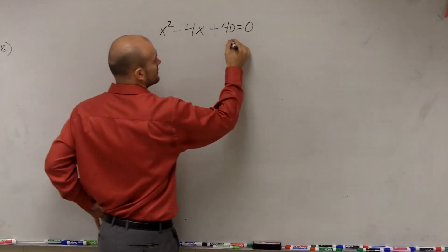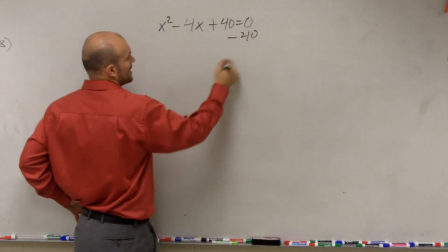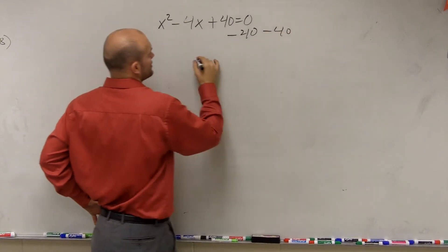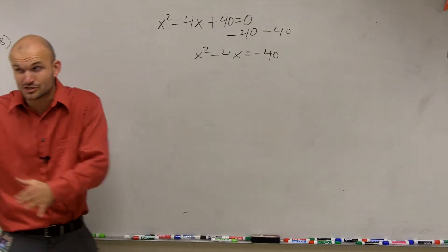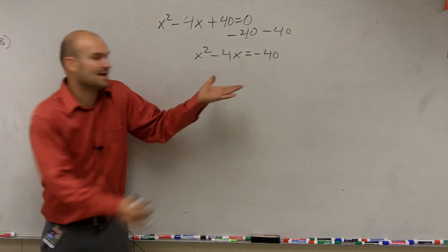Well, we have a problem. If we subtract 40 to the other side, then you'd have x squared minus 4x equals negative 40. Now, I'm actually going to show you how to do this in a second. But then, yeah, you could factor out an x.